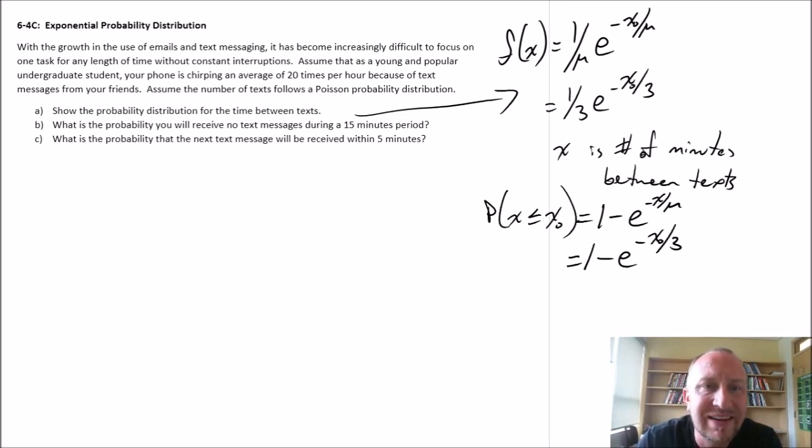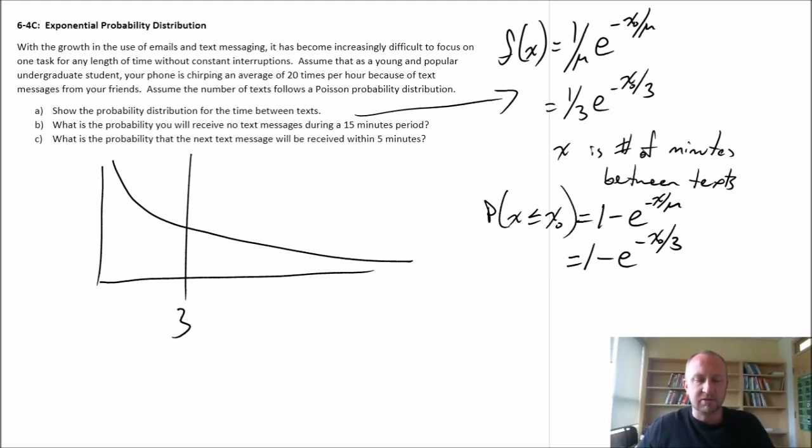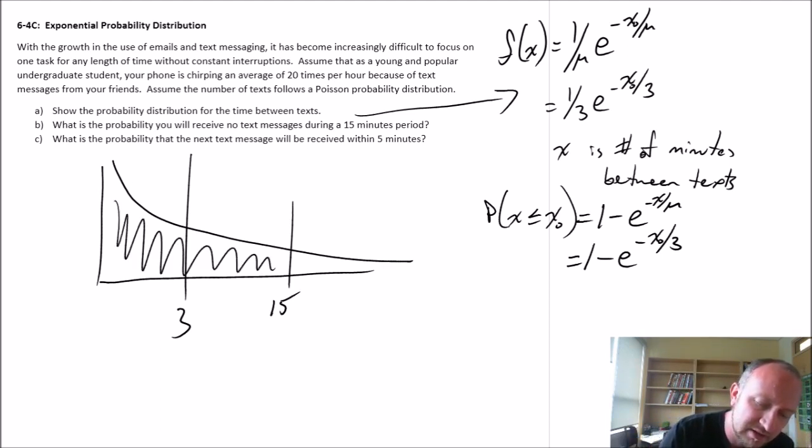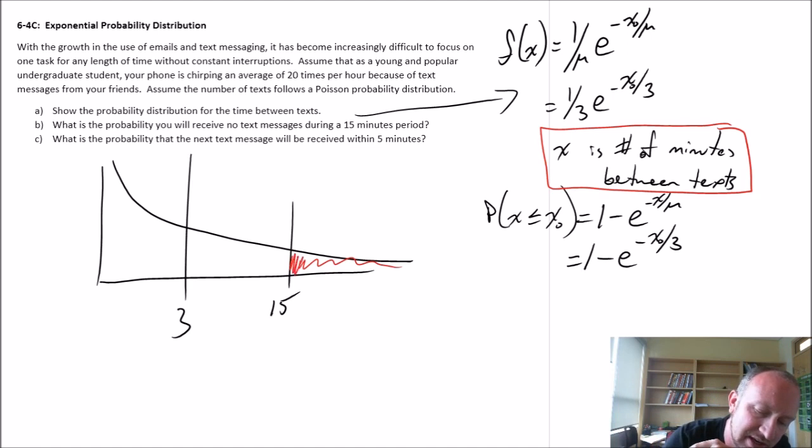Part B: What is the probability you will receive no text message during a 15-minute period? Here's this exponential function. We have a mean of 3 minutes. So what's the probability you will receive no text message during a 15-minute period? Here we're looking at some value 15. Are we wanting to calculate this probability here, or this probability here? Is it the lower portion or the upper portion? Remember, the way that we've defined our variable is that x is the number of minutes between texts. So if I want to calculate the probability I receive no text message during a 15-minute period, then it means I want to calculate the probability of that interval between texts being something greater than 15 minutes. So I'm looking at this area up here.